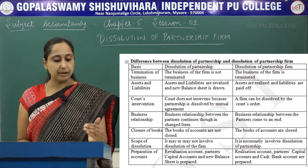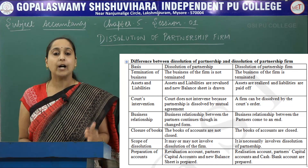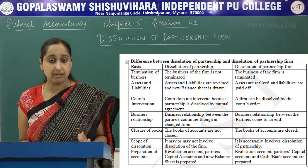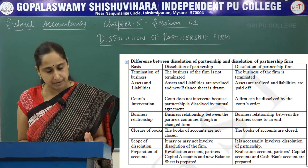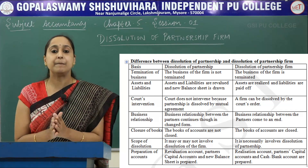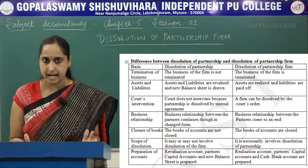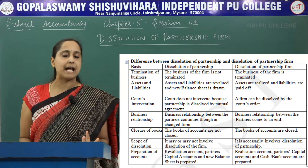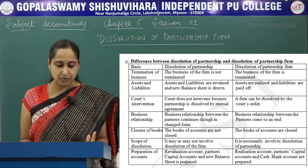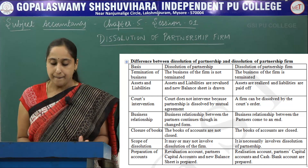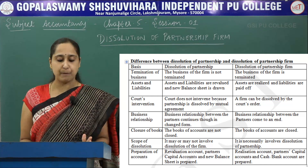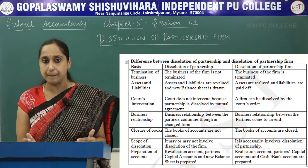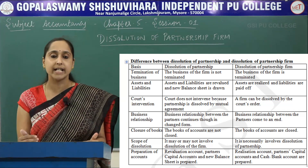On the basis of termination of business: in Dissolution of Partnership, the business of the firm is not terminated because the remaining partners continue their business. In Dissolution of Partnership Firm, the business comes to an end and the firm is closed. The second difference is that in Dissolution of Partnership, assets and liabilities are revalued and a new balance sheet is drawn. But in Dissolution of Partnership Firm, all assets are realized and all liabilities are paid because the firm is closing.